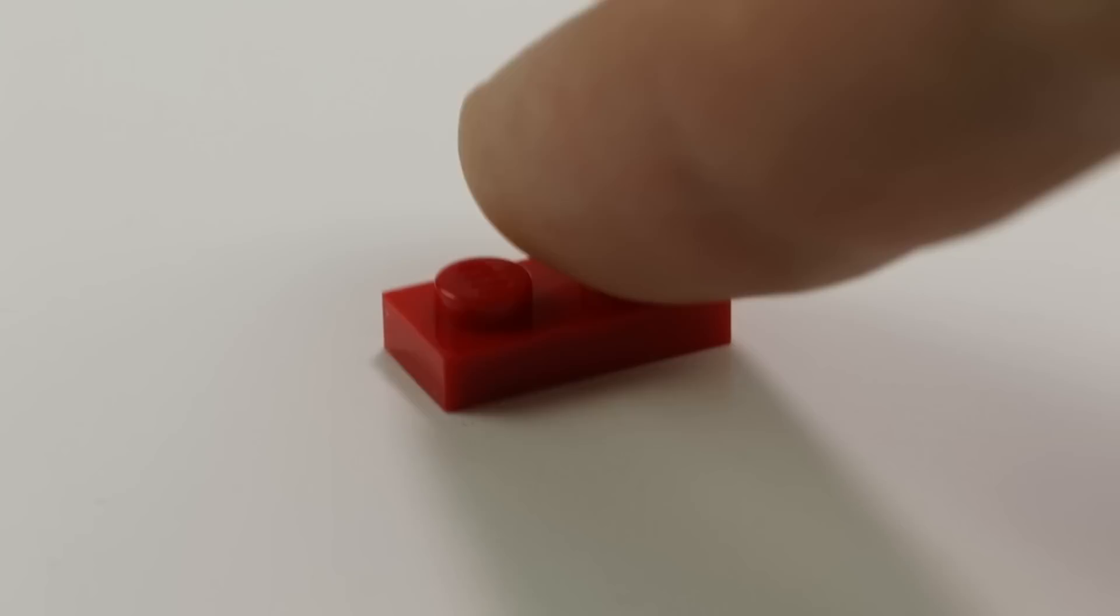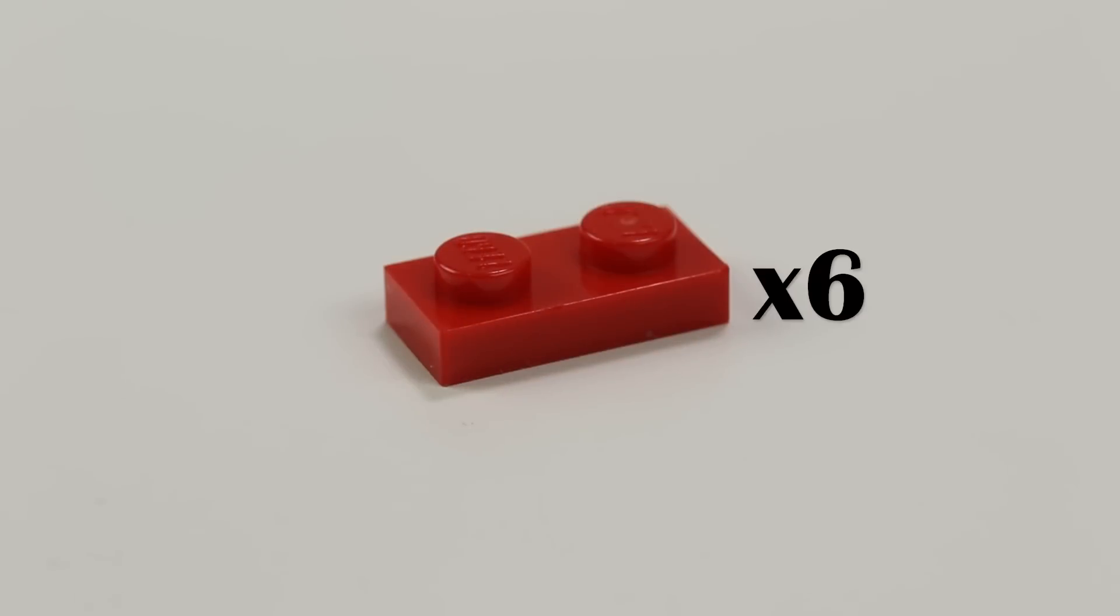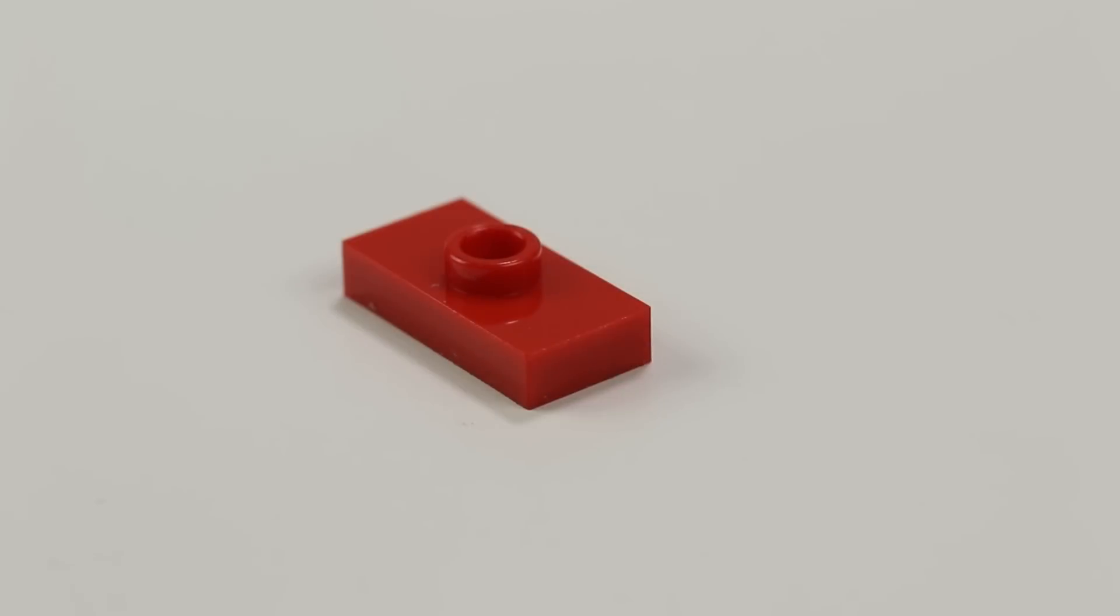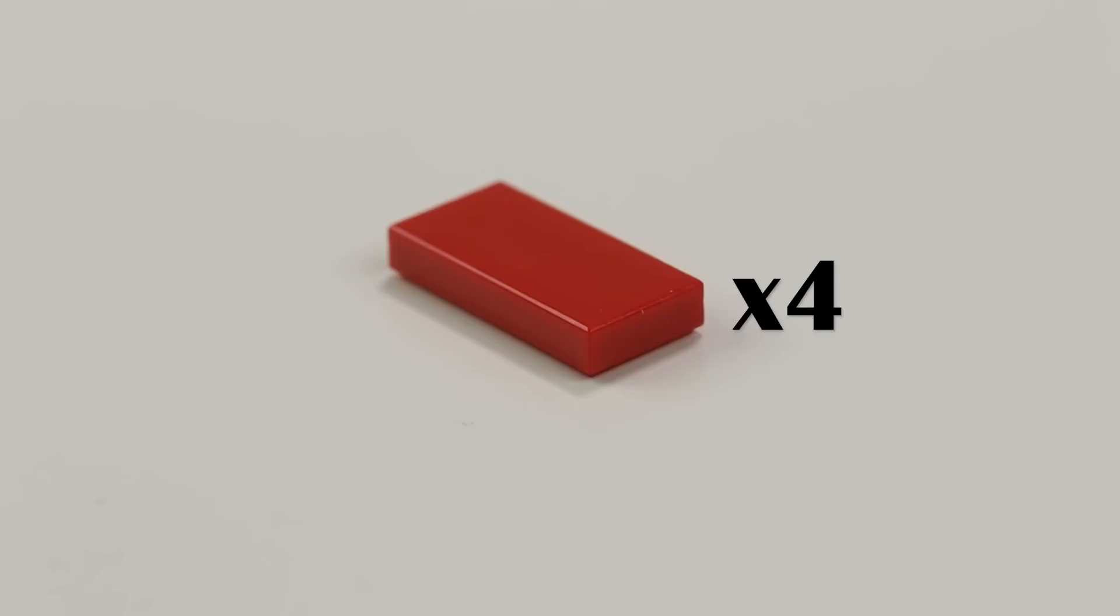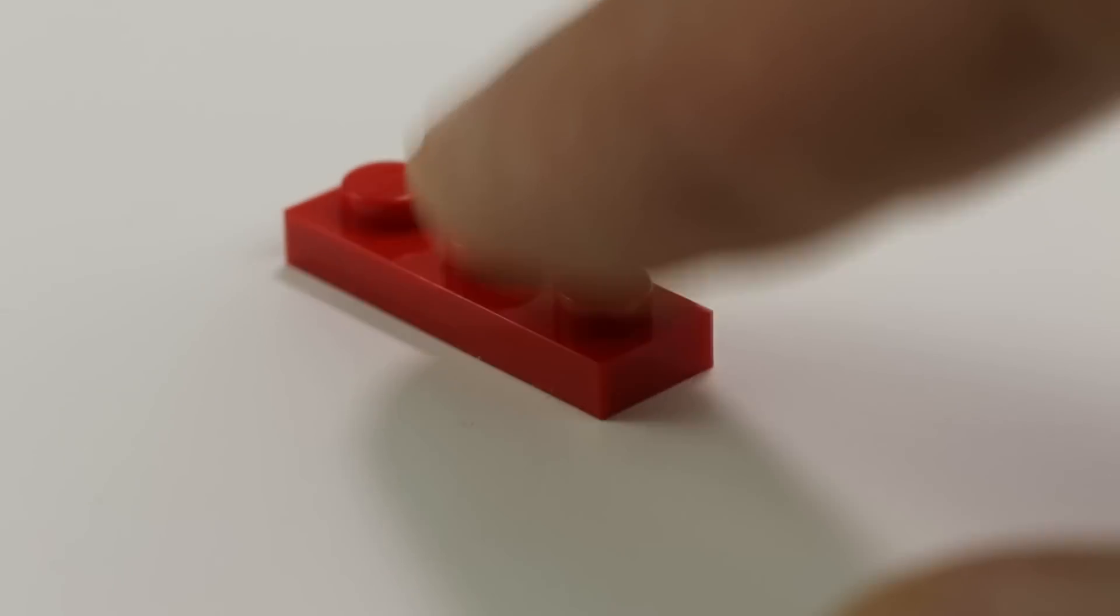Here are the parts you'll need. First, in red, you'll need six 1x1 plates, eight 1x1 tiles, six 1x2 plates, six 1x2 offset or jumper plates, four 1x2 tiles, and two 1x3 plates.